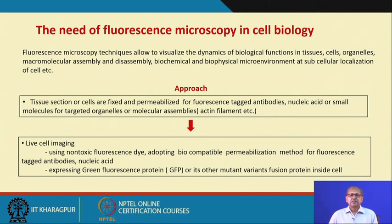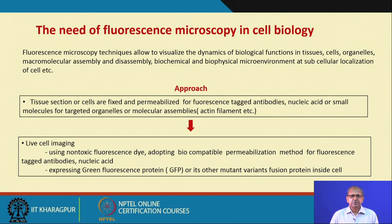What are the approaches used? Initially, cells are fixed and then permeabilized, and different fluorescent small molecules or fluorescent molecules tagged with antibodies and nucleic acids are targeted to different organelles or molecular assemblies like actin filaments. On the other hand, fluorescence-based imaging can also be done in living cells using time-elapsed microscopy. This can be done using non-toxic fluorescent dyes adopting biocompatible permeabilization methods for fluorescently tagged antibodies and nucleic acids.